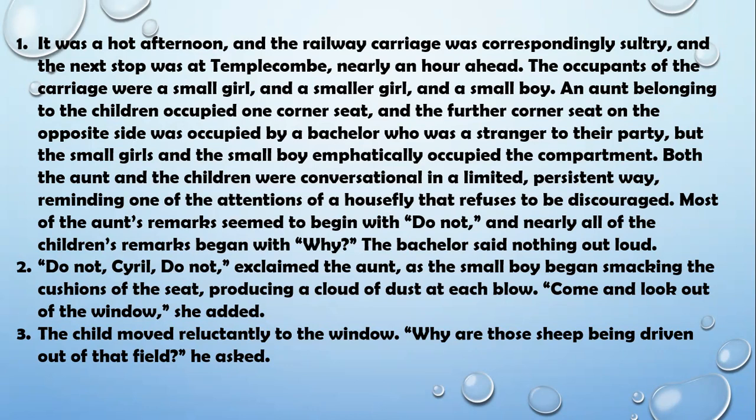Both the aunt and the children were conversational in a limited, persistent way, reminding one of the buzzing of a housefly that refuses to be discouraged. The aunt's remarks and the children's ongoing chatter were like a housefly flying around you that won't go away — you can't discourage it or make it leave. In this way, the children and aunt were bothering the bachelor and other passengers traveling in the compartment.